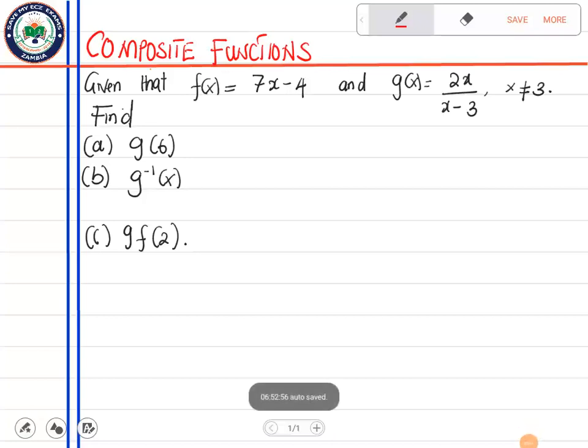Okay, so I have a question here from mathematics, specifically on composite functions. It says: given that f(x) equals 7x minus 4 and g(x) equals 2x divided by x minus 3, where x is not equal to 3. There's a reason why x is not equal to 3 - because if x equals 3, then you're going to have a 0 in the denominator and this becomes undefined.